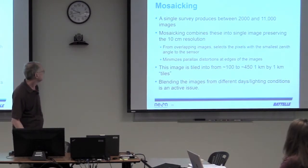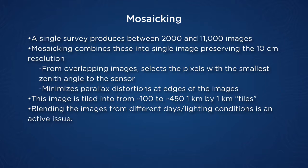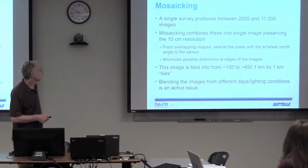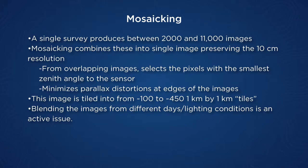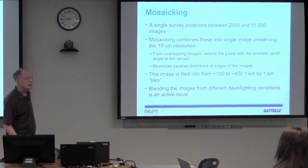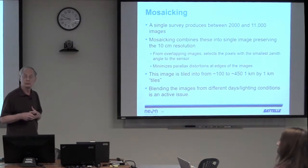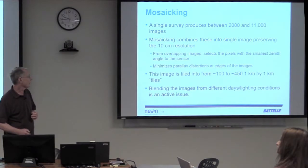Finally, mosaicing. A single survey will produce between 2,000 and 10,000 images, and mosaicing combines all of these into one image. From all these overlapping images, you select the pixel with the smallest zenith angle — the most vertical angle — to minimize the distortion we discussed. The result is then tiled into images which are one kilometer on a side, and you can end up with between 100 and 450 of these tiles. One ongoing issue is how you blend images from different days or different times of day with different solar zenith angles into something that looks uniform.